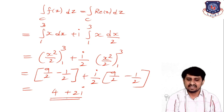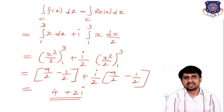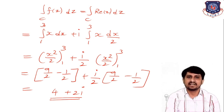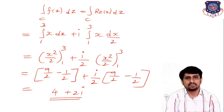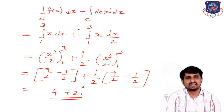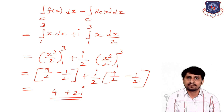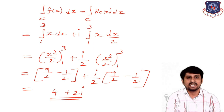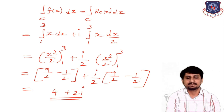In today's lecture, we discussed how to solve an example of a line integral using the important formula: ∫f(z)dz = ∫(u dx - v dy) + i∫(u dy + v dx). All students have to remember this formula. Also, you have to remember how to find the equation of a line joining two points (x1, y1) and (x2, y2), and the equation of a circle. Thank you.